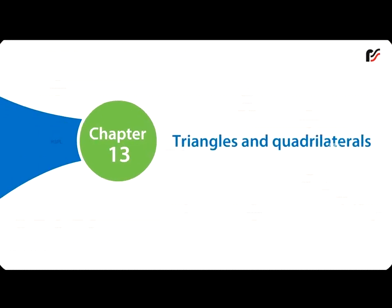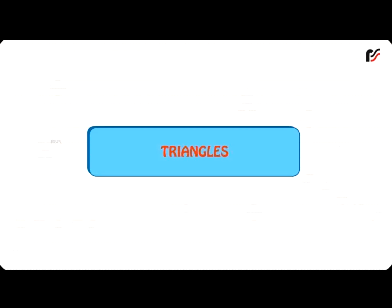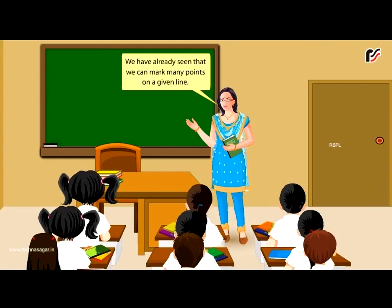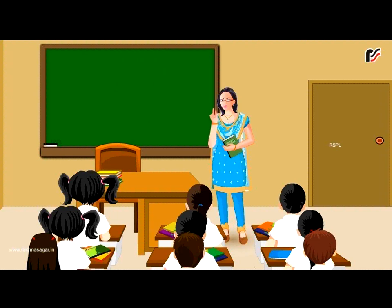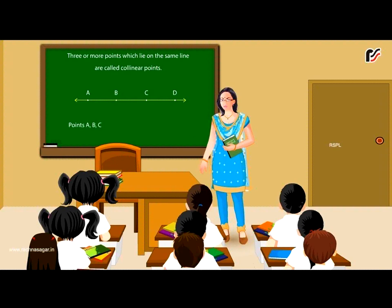Chapter 13: Triangles and Quadrilaterals. We have already seen that we can mark many points on a given line. Three or more points which lie on the same line are called collinear points. Points A, B, C and D which lie on the same line are collinear points.